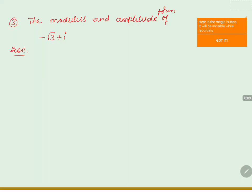Find the modulus and amplitude form of minus root 3 plus i. So first, what is the given complex number? We will write it as z, that is equals to minus root 3 plus i. Now that can be written as minus root 3 plus 1 into i, which can be written as a plus ib.